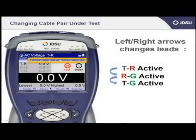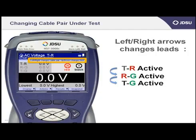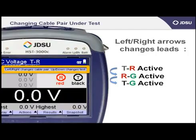Near the top of the screen, in light blue, there are two phrases: 'left and right changes the cable pair,' and 'up and down changes test.' Starting with the first one — left and right changes cable pair — that means if you press the left or right arrow, the cable pair you were testing changes.